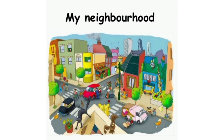Observe the picture. This picture may aapko bhoot saray ghar dikh rahe honge, peed dikh rahe honge, vehicles dikh rahe honge, yani gaadiya, bhoot saray log dikh rahe honge, as well as pet. Now this is a picture of a neighborhood.